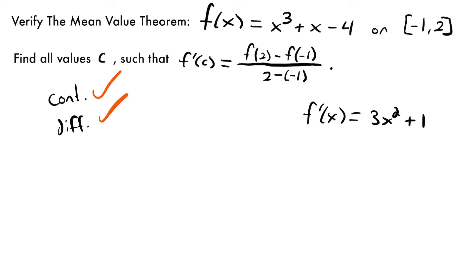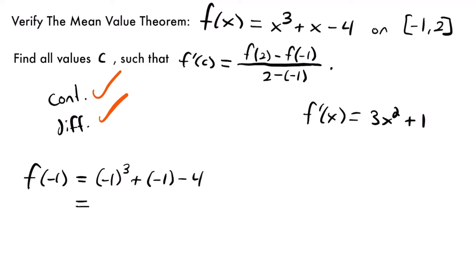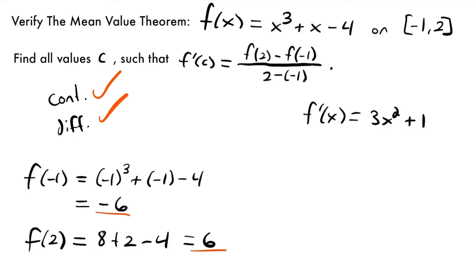Now that we've checked both conditions are true, we can verify the mean value theorem. The next step is to evaluate our endpoints on the function to calculate the slope. For our first endpoint, f(−1) = (−1)³ + (−1) − 4 = −1 − 1 − 4 = −6. For our other endpoint, f(2) = 2³ + 2 − 4 = 8 + 2 − 4 = 6. So now we have the two values we need to calculate the slope between the endpoints.